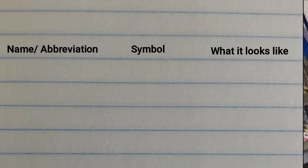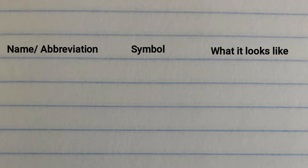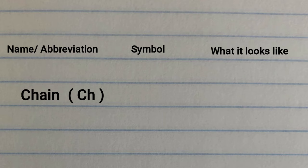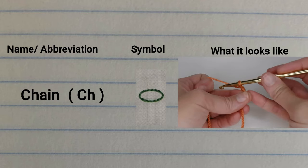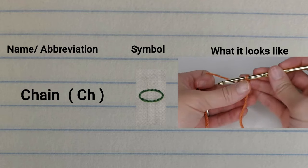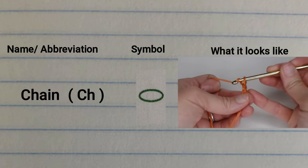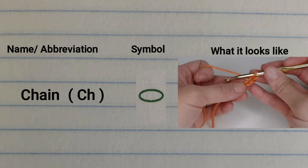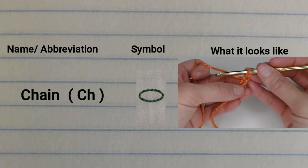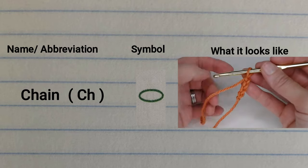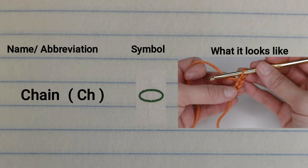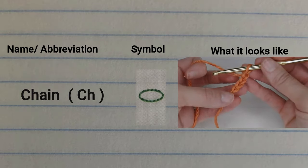Let's go ahead and dive right into our very first stitch. The very first stitch we're going to go over is the chain. This is how it is spelled, this is the abbreviation, here is the symbol for chain, and this is what a chain looks like. Each one of these V shapes is one chain, so here I would have four chains: one, two, three, four.